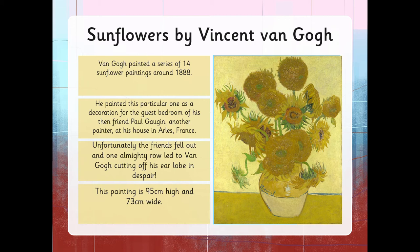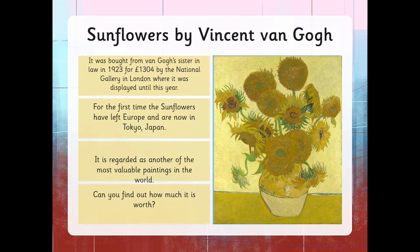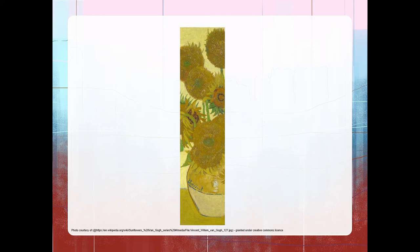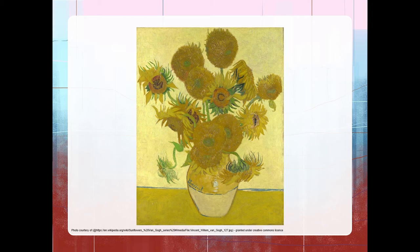This painting is 95 centimetres high and 73 centimetres wide. It was bought from van Gogh's sister-in-law in 1923 for £1,304 by the National Gallery in London where it was displayed until this year. For the first time the sunflowers have left Europe and are now in Tokyo, Japan. It is regarded as another of the most valuable paintings in the world. Can you find out how much it is worth? The reason this particular painting out of all 14 was seen as the most famous is because van Gogh was basically painting yellow upon yellow — just lots of different hues of yellow. Can you count how many sunflowers there are?